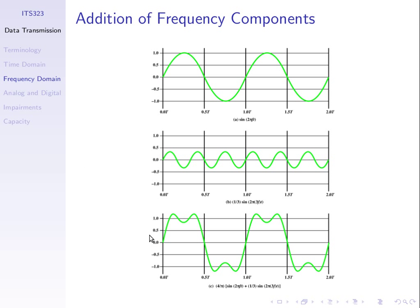Everything we've looked at so far is in what's called the time domain — all our plots show the signal magnitude as a function of time. This axis is time increasing; this axis is the signal amplitude. That's in the time domain. It turns out that for mathematical analysis and for designers of signals, people generally don't think about it from the time domain, but from the frequency domain.